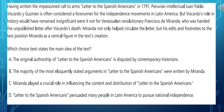Look at the last sentence: Miranda not only helped circulate the letter, but his edits and footnotes to the text positioned Miranda as a central figure in the text creation. So who's the original writer? This person, Viscardo Guzman. But what about Miranda? His notes — he helped in the circulation of the letter.